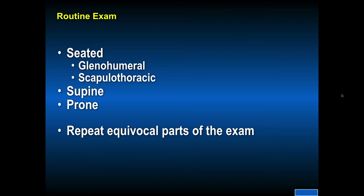Seated exam. Make sure you have the shoulder and scapula exposed. Have females in a gown or a sports bra; males should remove their t-shirts. Look at the scapulothoracic articulation. Have the patient do a seated jumping jack or a seated dip, or have them do a push-up against the wall, or a palm press, to see if the scapula moves symmetrically on the thoracic cage. Have the patient at the end of the table so you can go around and examine the glenohumeral articulation and compare the injured to the normal.